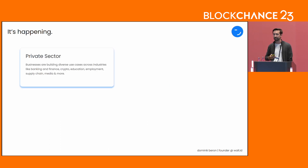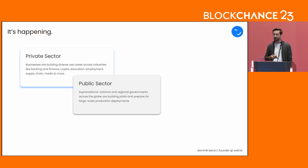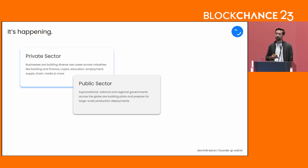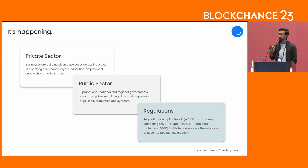At the end of the day, it's happening. We see private sector adoption with businesses across industries from banking to media and education. We see governments — supranational organizations like the Commission, national governments, regional governments like cities — building pilots and getting ready for large-scale production deployments. And we see regulations in areas like EID, anti-money laundering, crypto regulation, and data protection.